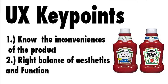By reversing the bottle, gravity brings the ketchup down toward the wide bottleneck tip. So whenever a person tries to get the ketchup out, even in small amounts, they're able to do so easily. That creates good user experience — it's one of the best examples of improved UX.